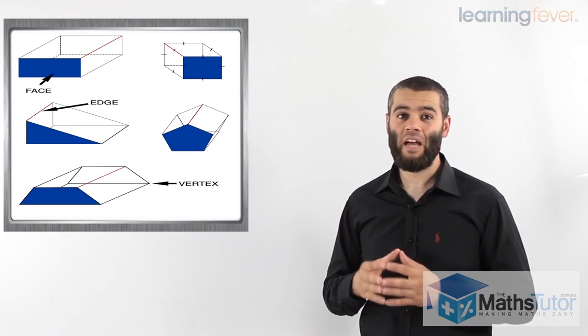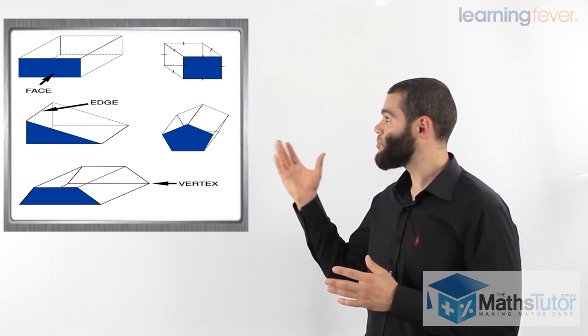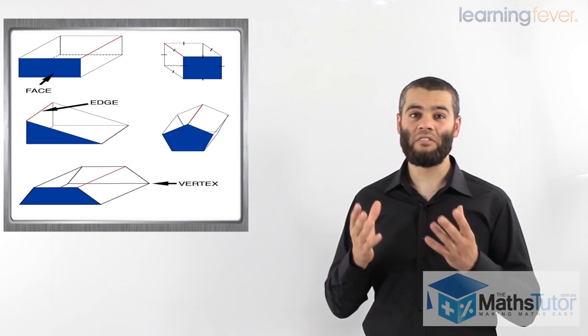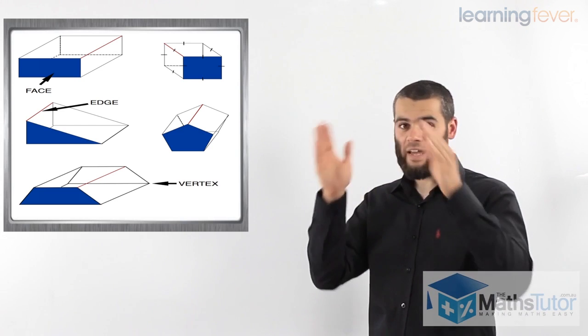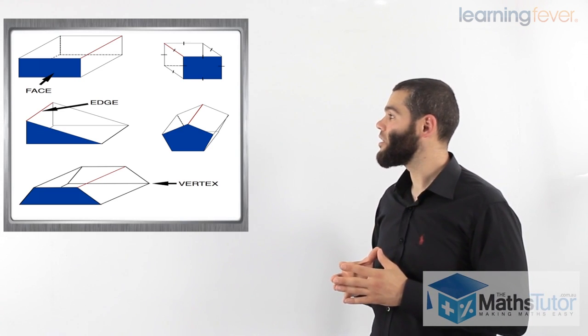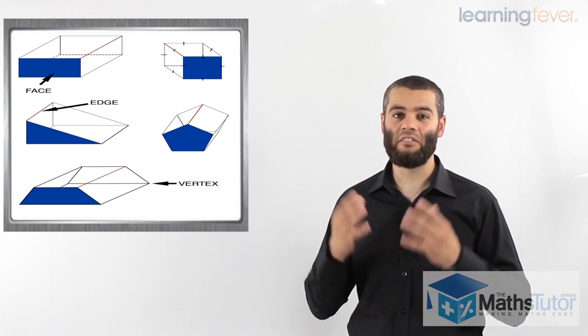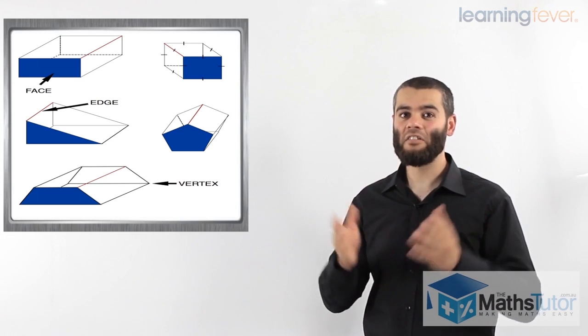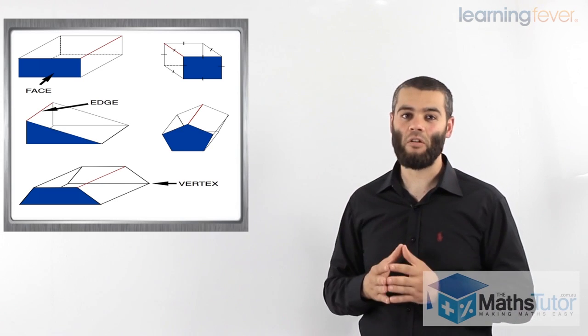However, the triangular prism has triangles and also rectangles. The pentagonal prism has a pentagonal cross section, but it also has rectangles around it. And the trapezoidal prism has the main face as the trapezium, but it also has rectangles surrounding it to make up the solid shape.